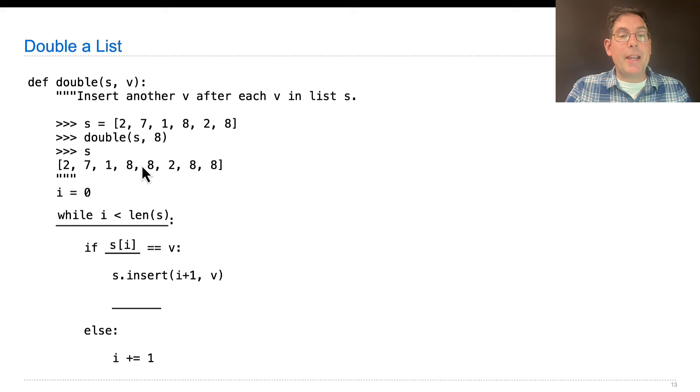We insert another 8 at position 4, and now it's time to think about position 5. But i was still 3, so we got to add 2 to it in order to move from here to here. If there are lots of v's in this list, there will be lots of insertions.